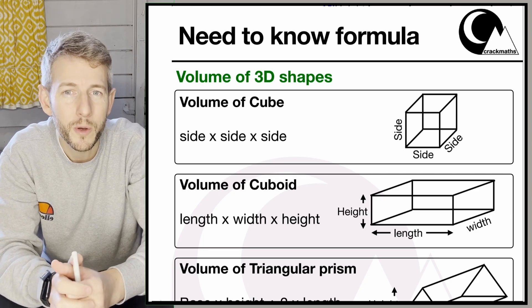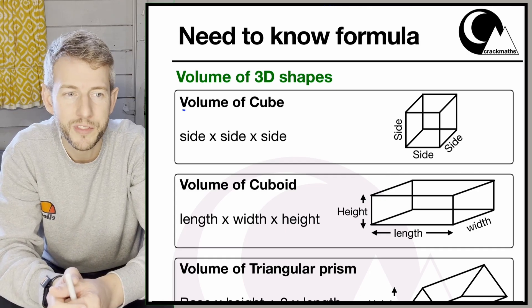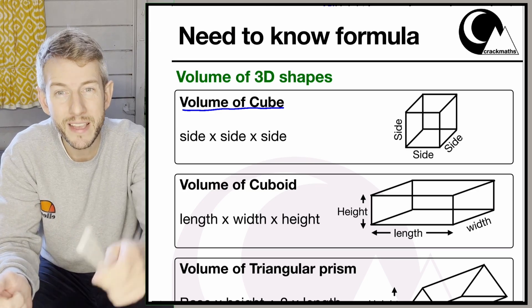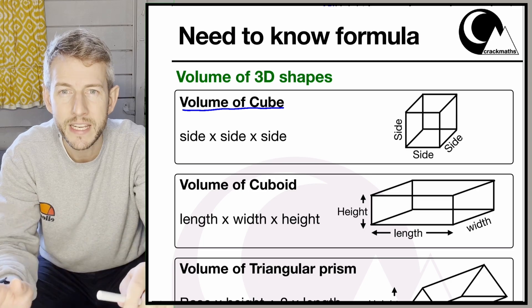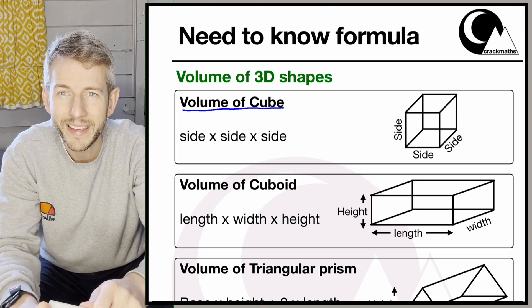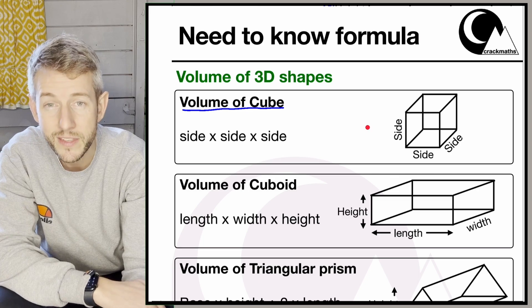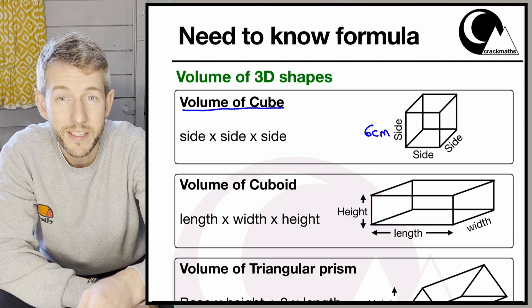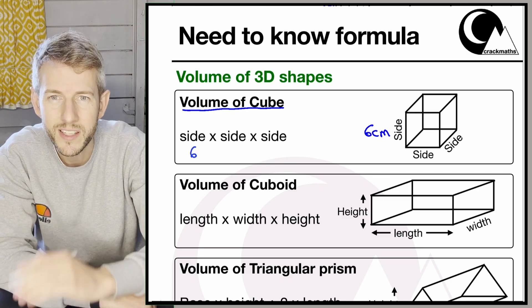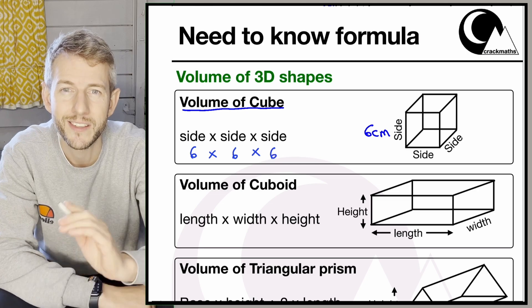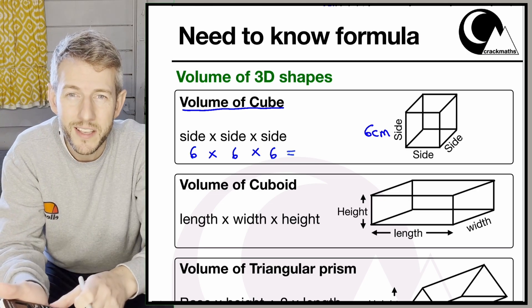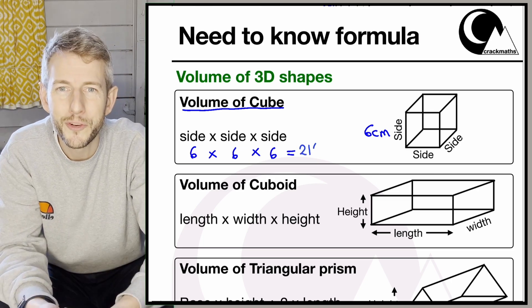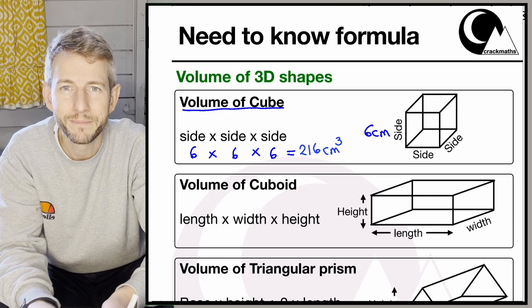If you have a look on the screen, the volume of a cube is side times side times side. The cube is a 3D shape where all sides are the same length. So if the side length is 6 centimetres, we do 6 times 6 times 6. 6 times 6 is 36, and 36 times 6 equals 216 centimetres cubed.